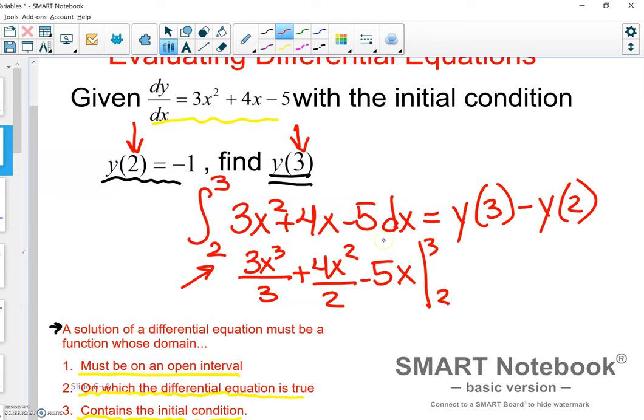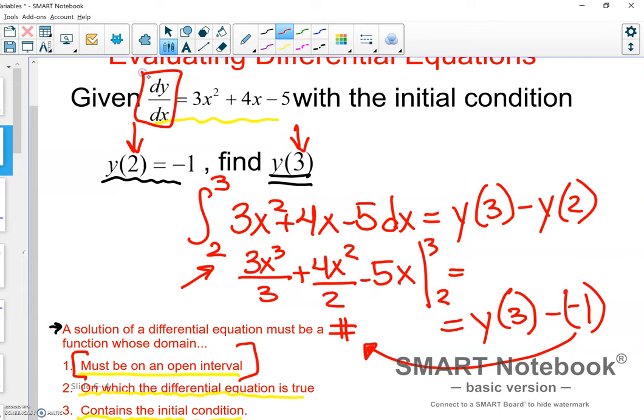So, we plug in 3 and subtract that from 2, and we get some constant, right? And then, that constant then, since we know that y of 2 is negative 1, we would add 1 then to the constant, and we would find the value for 3. And so, our solution, it must be in the interval of the derivative function, the differential equation. Well, we know a parabola, a quadratic, which is our differential equation, is continuous and has a domain of all values. So, that would be good.